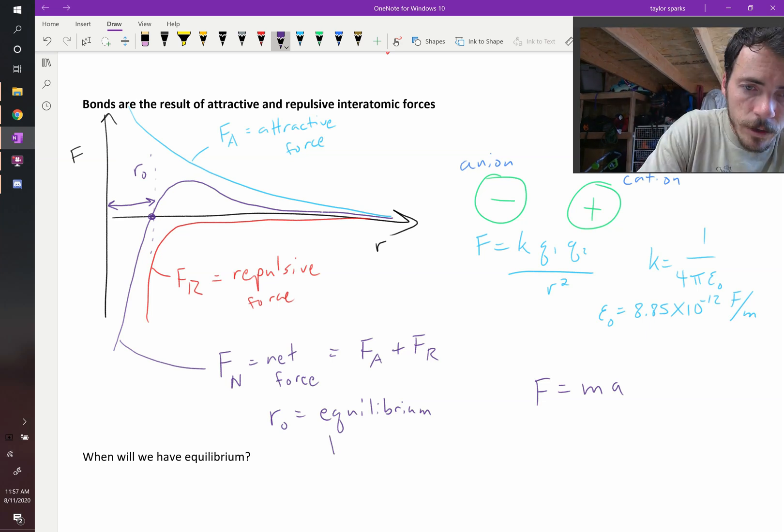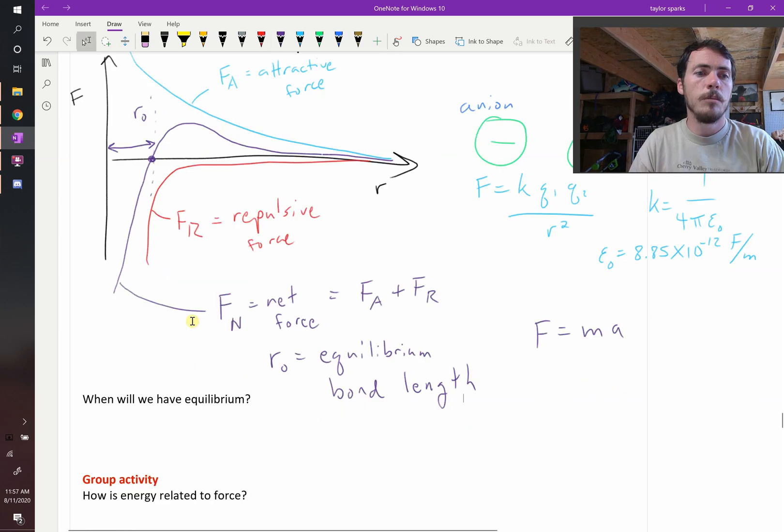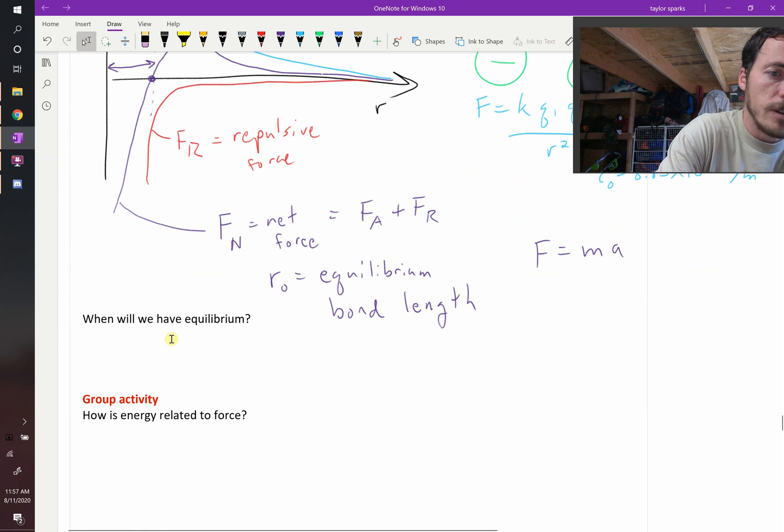Okay, so we have equilibrium when F net equals zero.